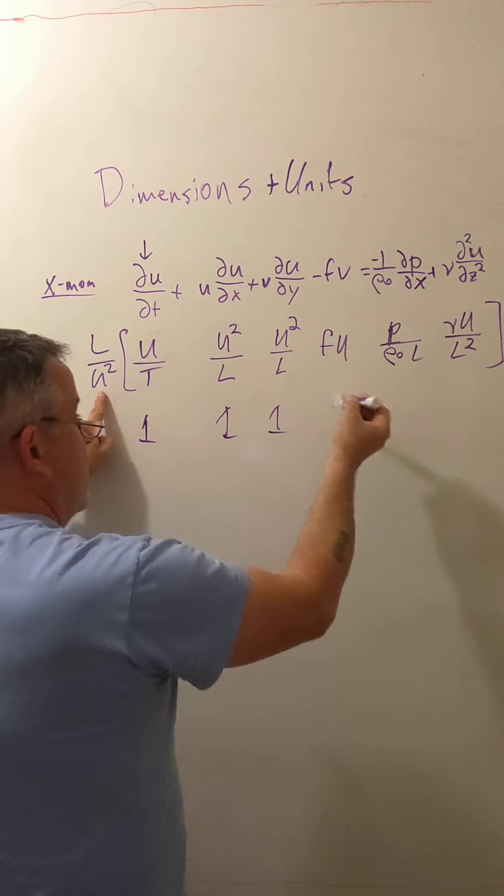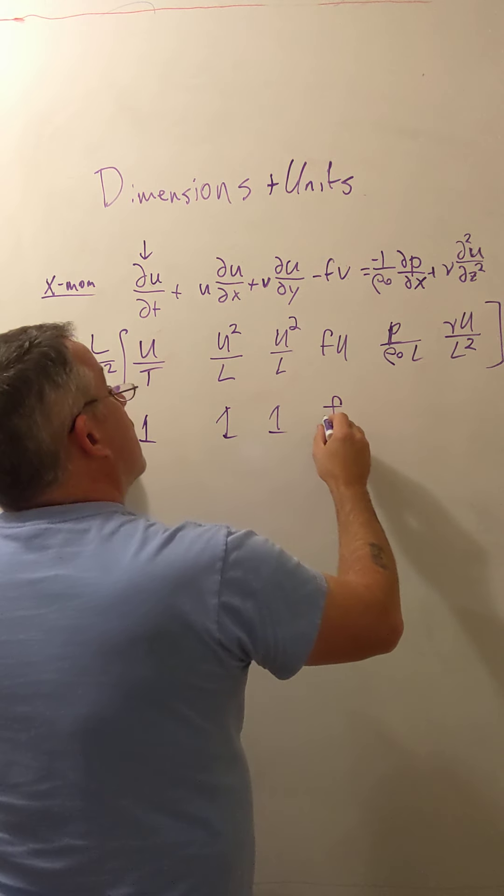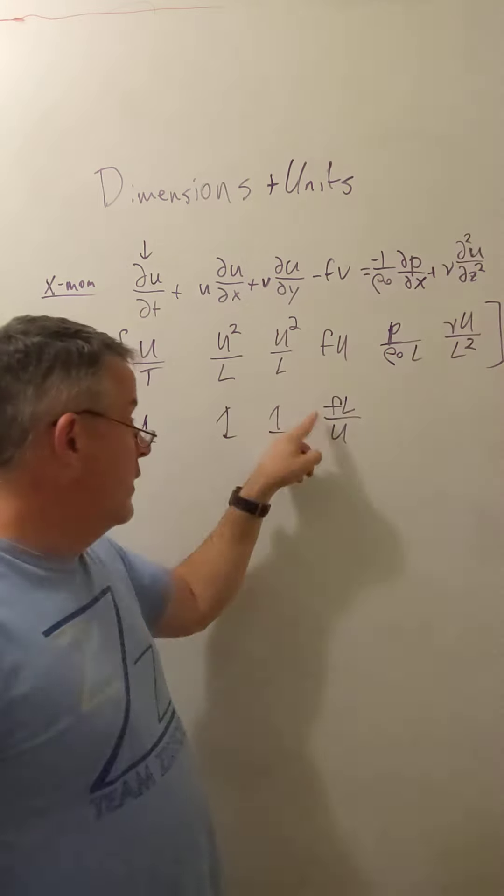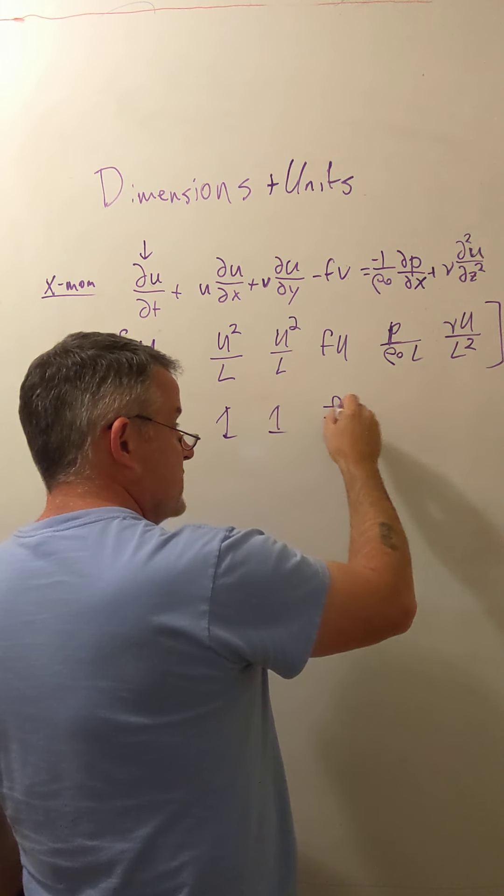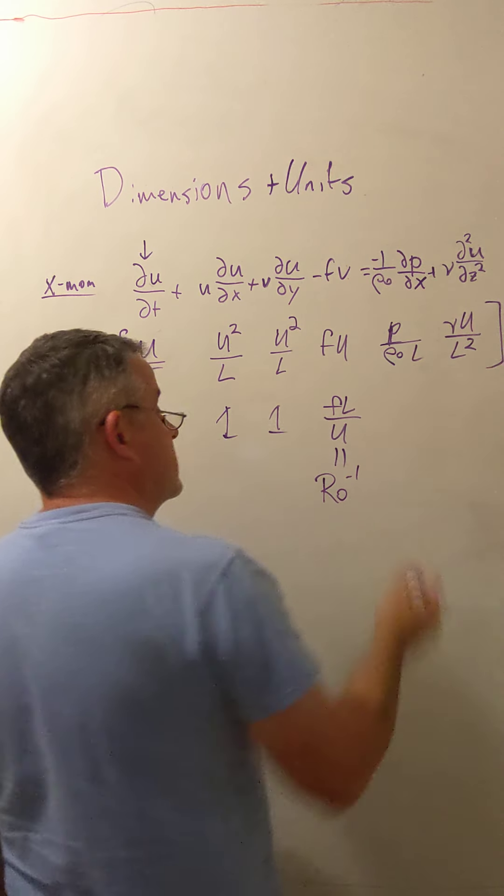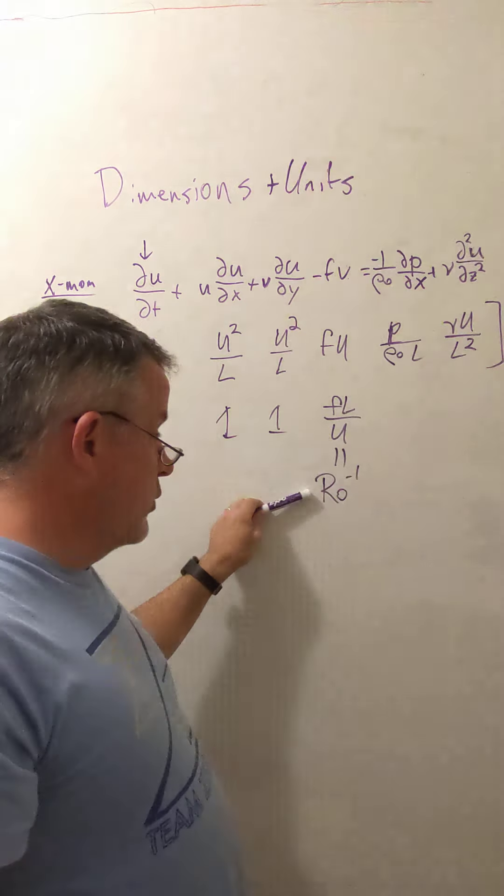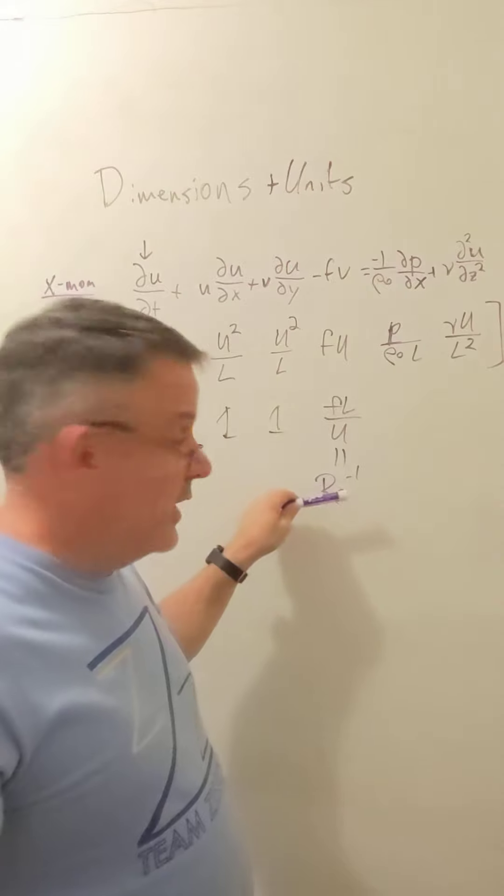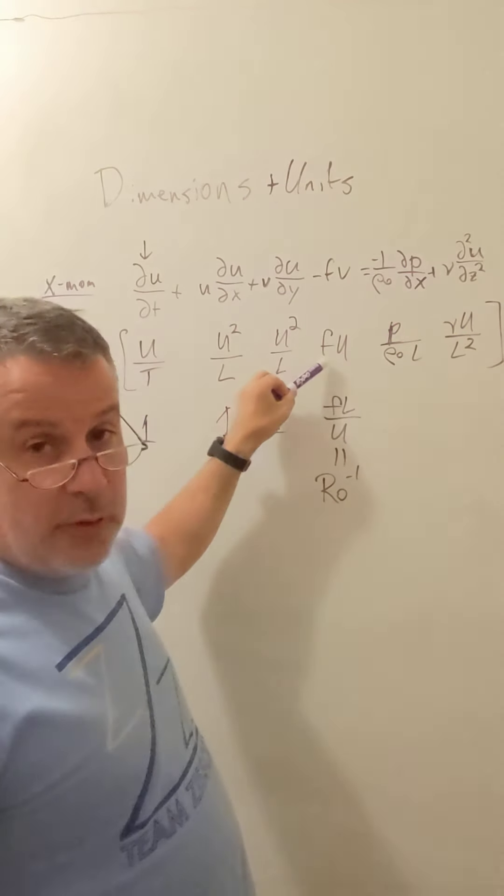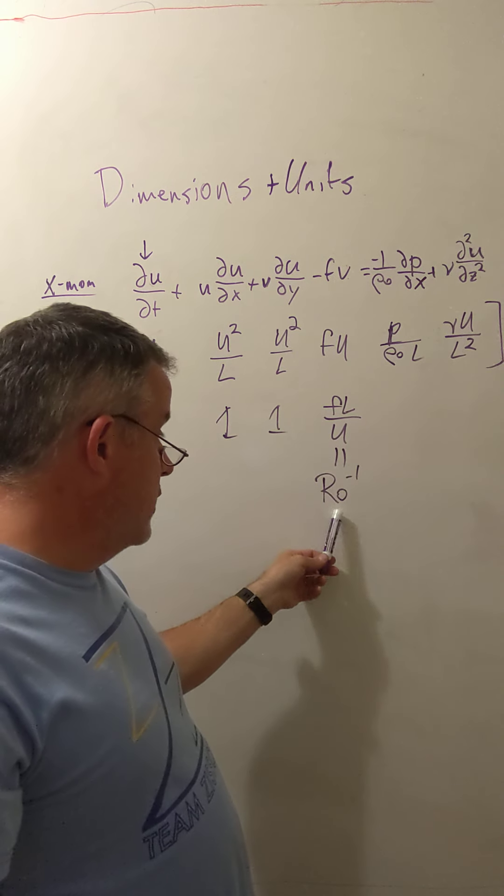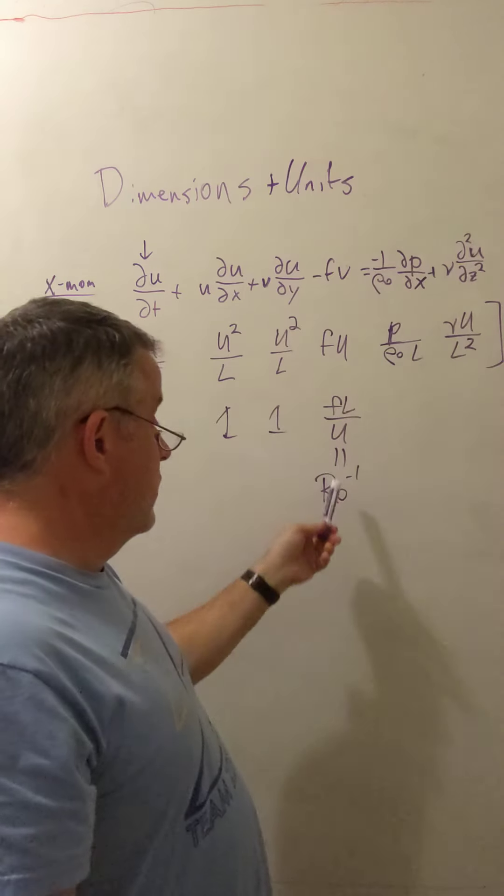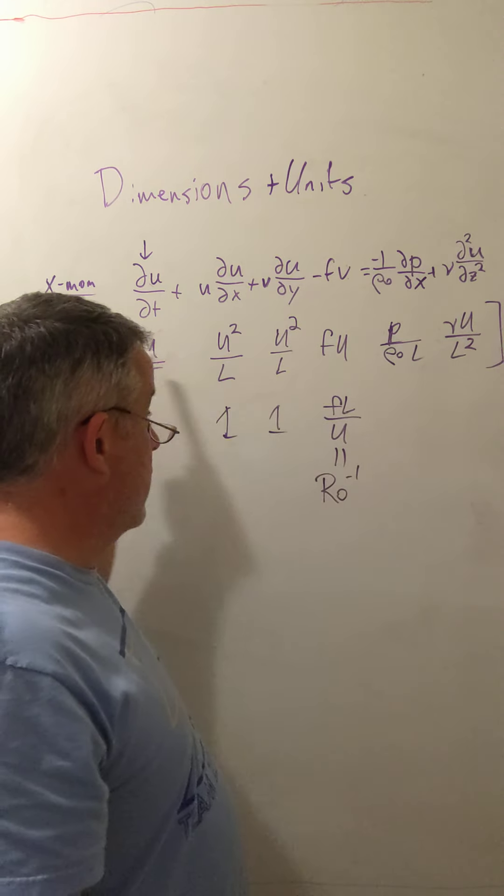This one also has size one. This one also has size one. What about this one? This comes out to be f l over u. This has no dimensions. It has the same dimensions as the number one, but it's a ratio of something comes to the length scale times the magnitude of the Coriolis parameter versus the velocity. This thing is actually called the Rossby number, or actually the inverse of the Rossby number. u over f l is the Rossby number. Rossby is a famous atmosphere and ocean dynamicist. This number is named after him because he did a lot of work on rotating fluid dynamics. And this is the key term in a rotating fluid dynamics problem. And when the Rossby number is big, it means that this term is not very big compared to these other terms that are all size one. When the Rossby number is small, it means that this term is maybe more important than these other terms that are size one.